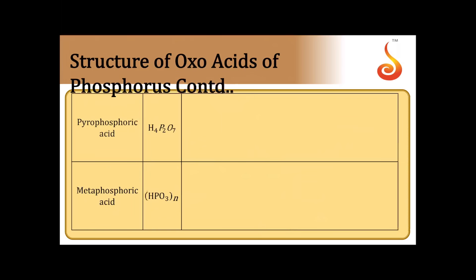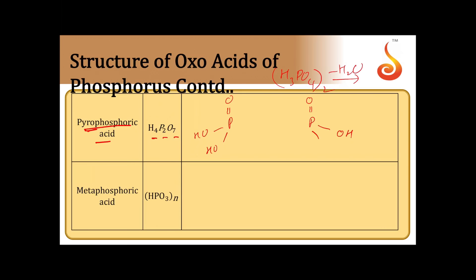Next comes pyrophosphoric acid (H4P2O7). It is obtained by taking two molecules of orthophosphoric acid and removing one H2O. The structure has two phosphorus atoms, each with one P=O bond; four P-OH groups are distributed between the two phosphorus atoms; and the two phosphorus atoms are connected by a P-O-P bond using the remaining oxygen.